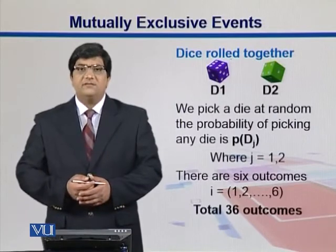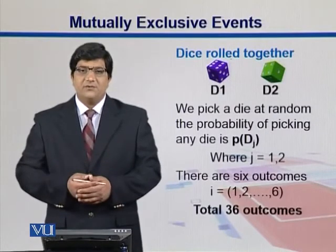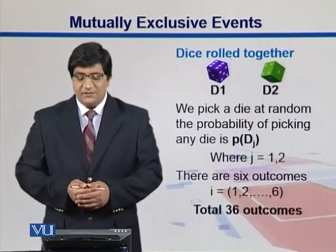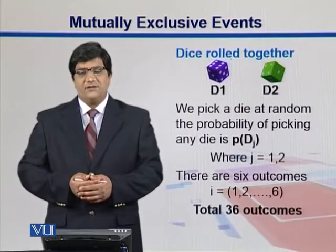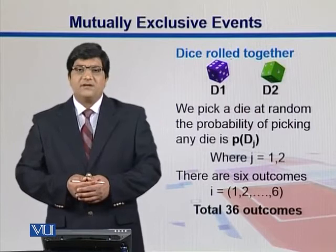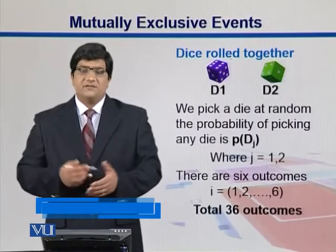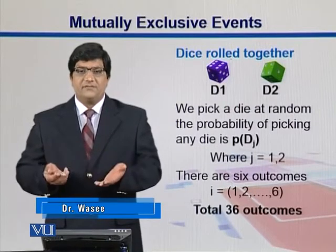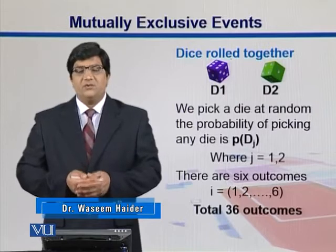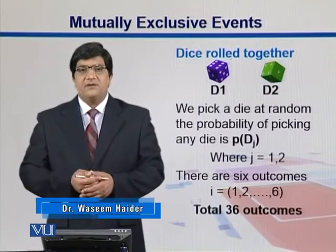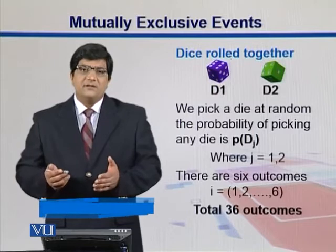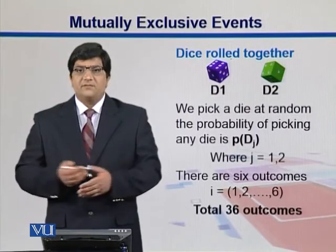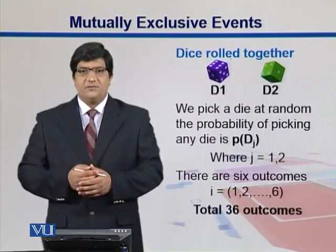For example, we take two dice. When we roll them together — D1 and D2 — we know that for each of them there are six different outcomes: we can get either 1, 2, 3, 4, 5, or 6. So if we roll them together, we can have 36 different possible outcomes.